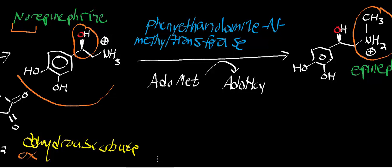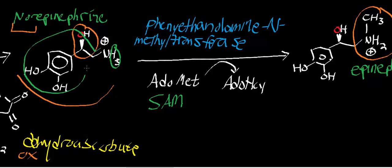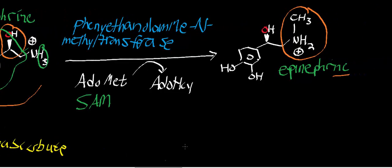Since this is a methyltransferase, certainly go back and watch the S-adenosylmethionine video. Adomet is often abbreviated SAM, meaning S-adenosylmethionine. S-adenosylmethionine is the universal methyl donor. If you look at norepinephrine, the only groups attached to the nitrogen are hydrogens. But in epinephrine, there's a methyl group attached to that nitrogen, and that methyl group came from S-adenosylmethionine.